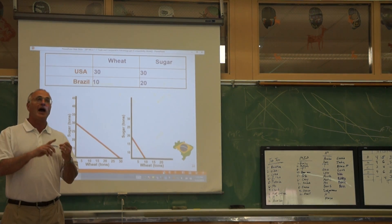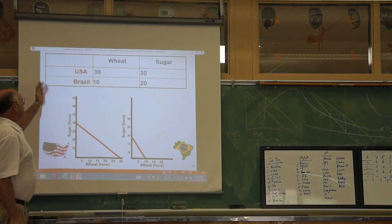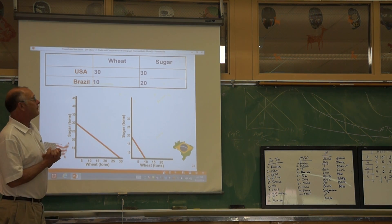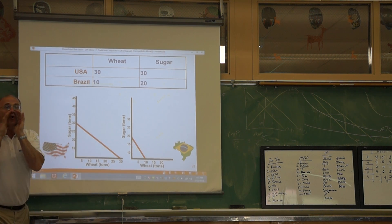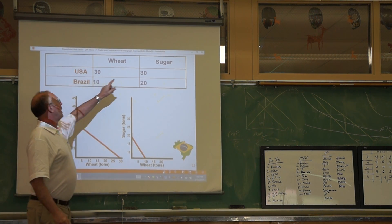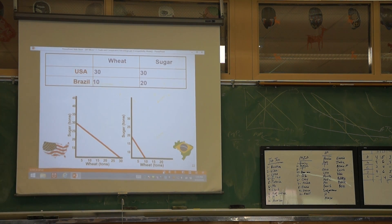OOO stands for output, other, over. So I'm looking to see who has the comparative advantage in wheat. I take the United States 30, and I remember OOO: other (sugar) over. So 30 over 30 is 1.